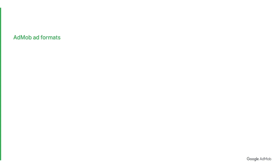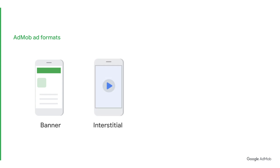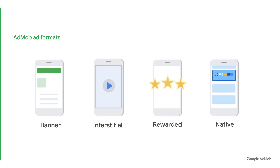Now let's get started with ad formats. The ad format you choose will determine how ads show up in your app. AdMob currently supports four formats: Banner, Interstitial, Rewarded, and Native.